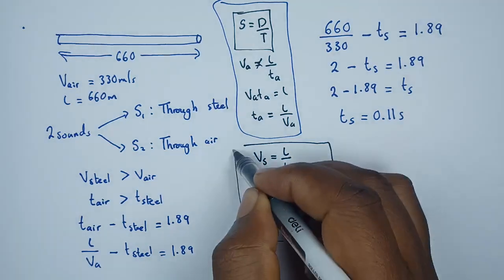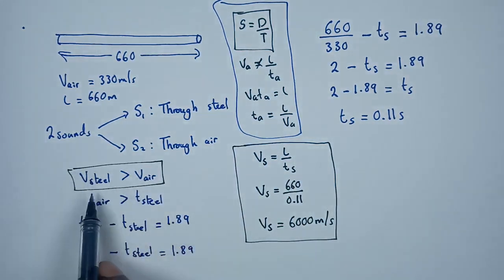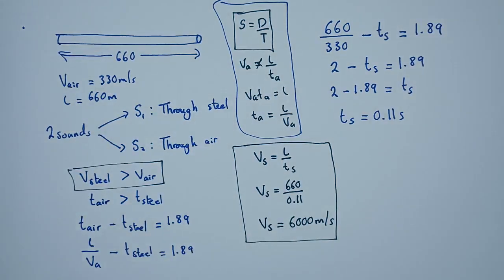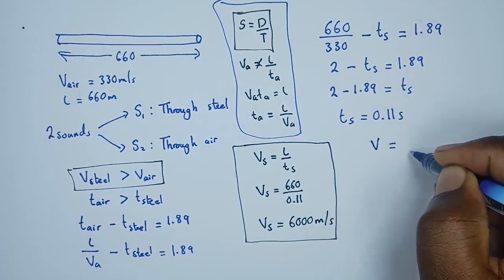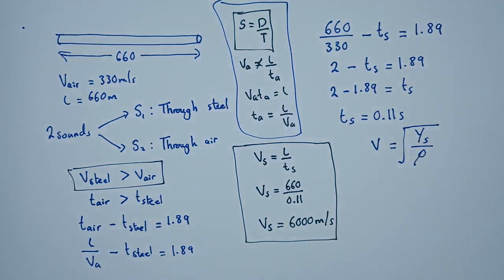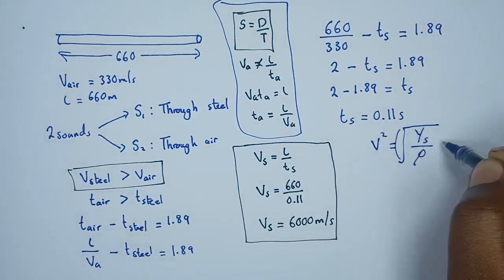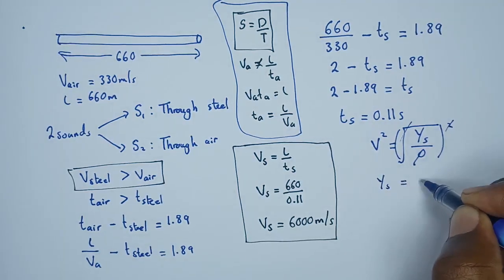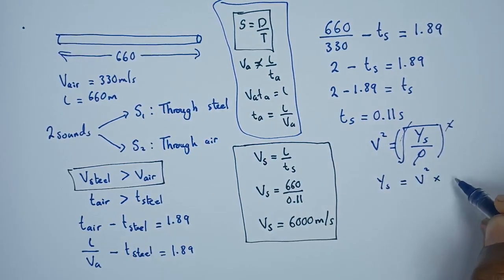This makes sense, because we stated that the velocity in steel is greater than the velocity in air — V_steel is 6000 m/s and V_air is 330 m/s. Now we can calculate the modulus of elasticity. The relationship is: V = √(Y_s / ρ), where Y_s is the modulus of elasticity and ρ is the density.